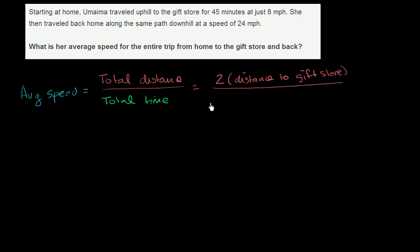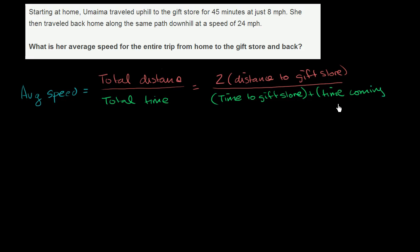And then what is going to be her total time? It's the time to the gift store plus the time coming back from the gift store. We know that the distance to the gift store and the distance back is the same, so the total distance is just two times the distance to the gift store. But we're going to have different times going to the gift store versus coming back.